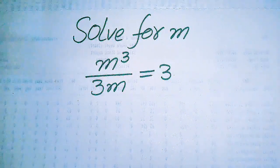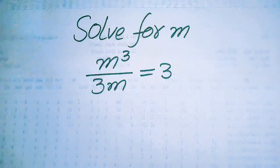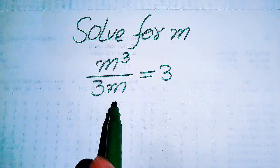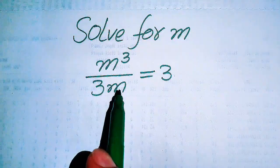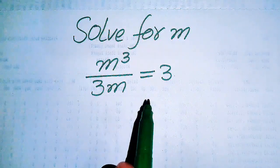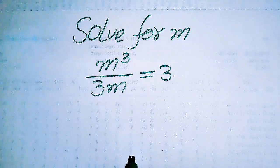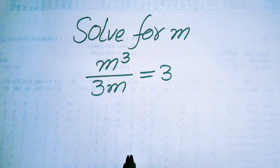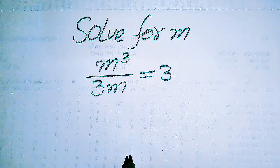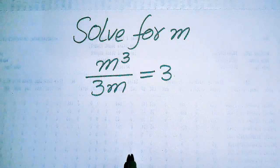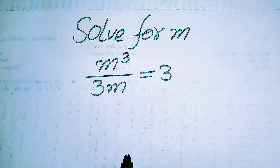Hello everyone. How to solve this problem for the values of m, if we have m cubed divided by 3m is equals to 3? We solve this problem for all the values of m, so here we need to find all the roots of this equation. At the last we will verify which of the roots are solutions and which of the roots are extraneous roots.